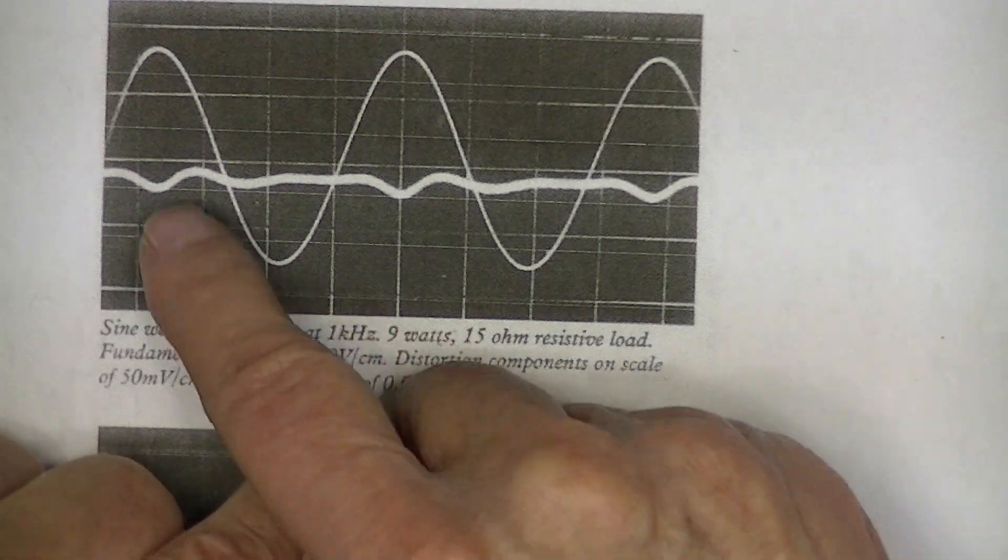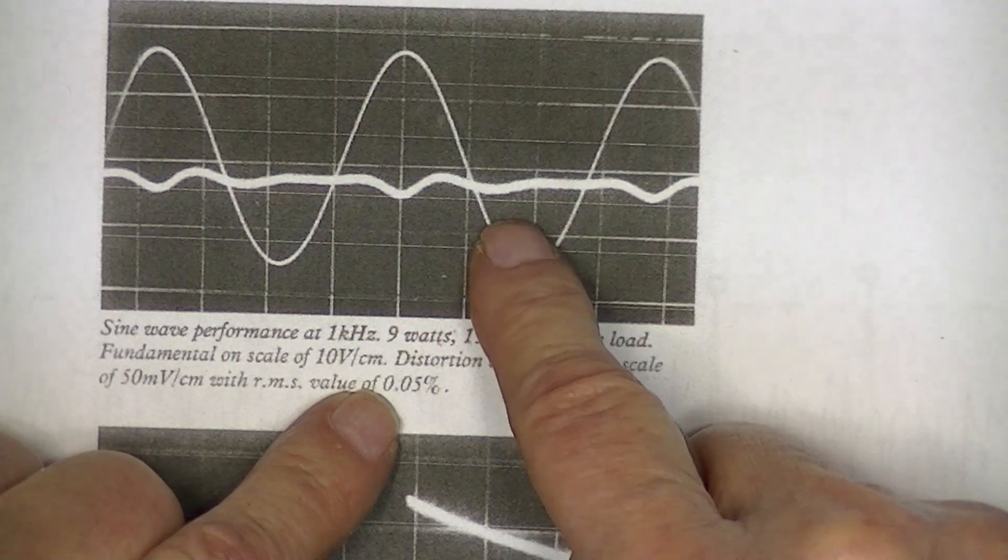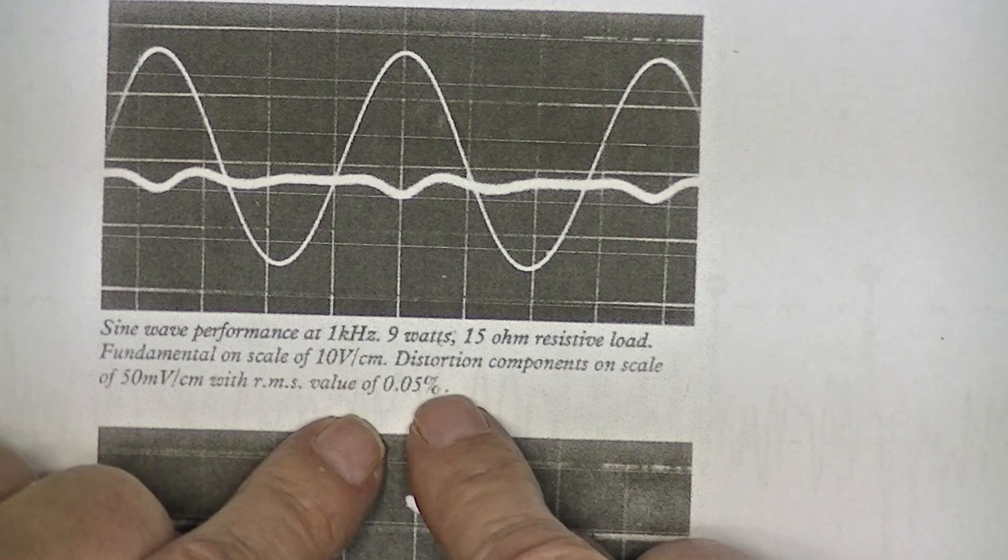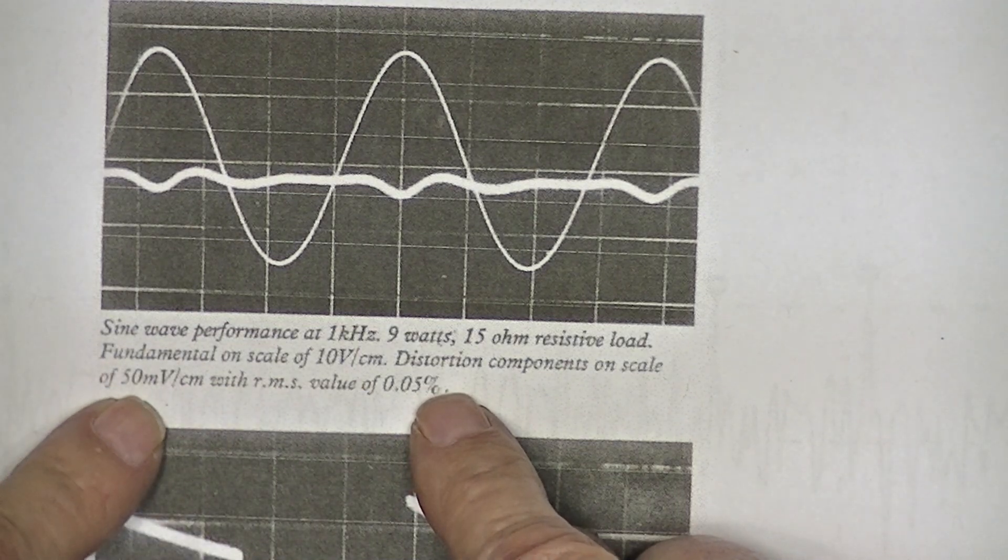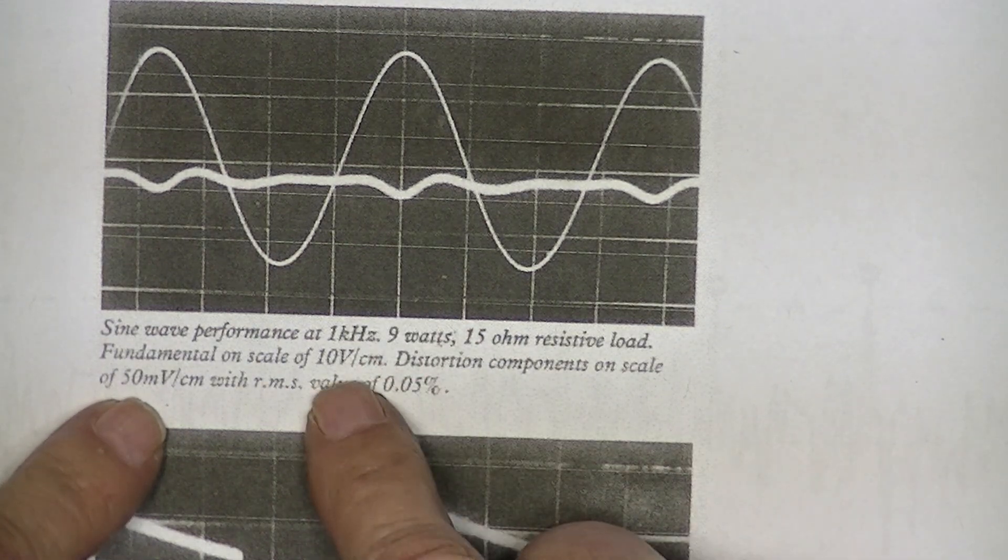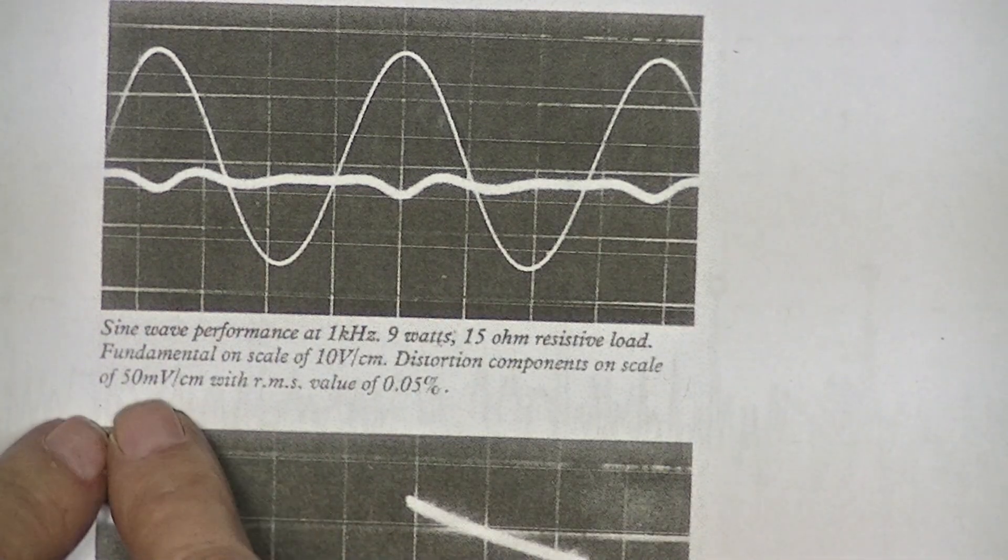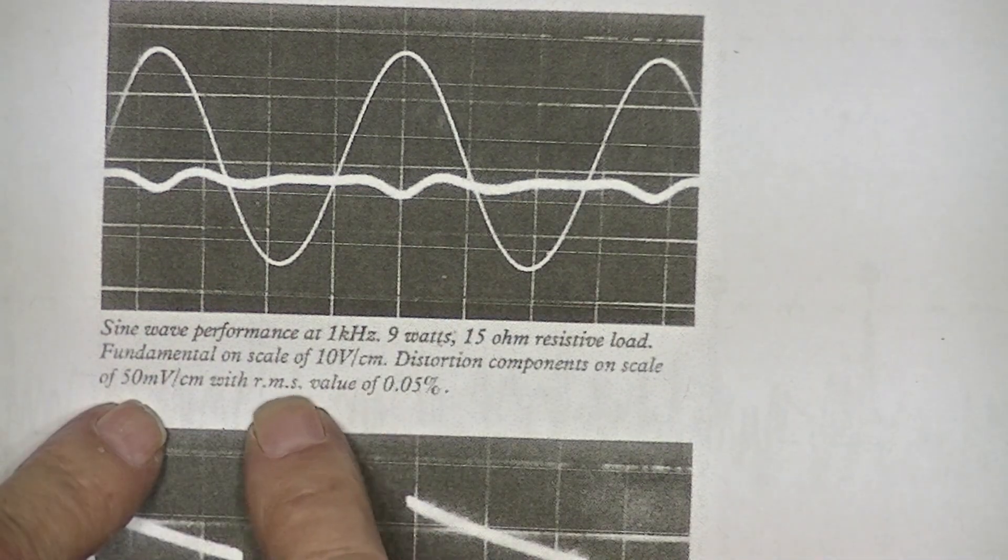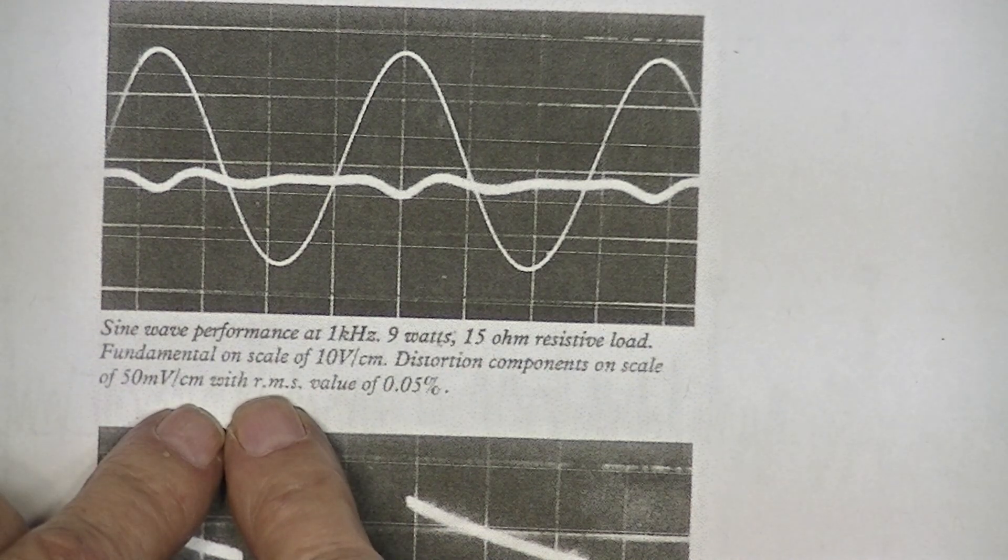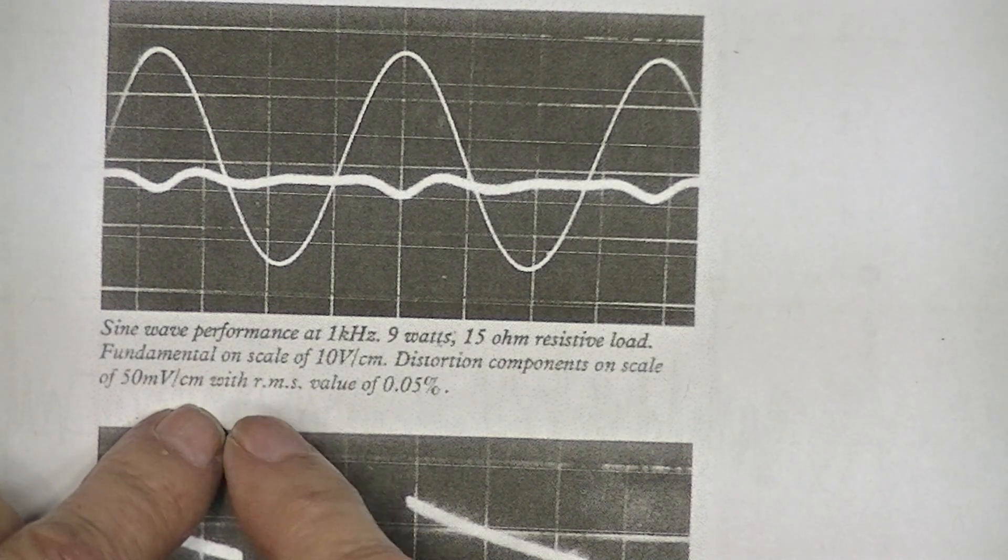The distortion component, which is this, that's what is left after removing this, is 50 millivolts. Had they been displayed at the same vertical scale, this would be insignificant, but he blew it up to 50 millivolts. I'm guessing that this remaining sentence, instead of RMS, this should probably be THD.